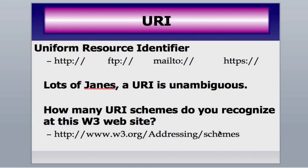Let's go back to the URI — Uniform Resource Identifier. Here are some of them: HTTP, FTP, Mail to, HTTPS — there are several. If you open your web browser and go to w3.org/addressing/schemes, you'll find a really long list of URI schemes. What this allows is different ways to make identifiers so we can identify who Jane is — unambiguously. We don't want any confusion between different Janes: is it Jayne Mansfield, Jane Smith, or Jane down the road who sells books? By having a URI or unique identifier, we'll be able to tell all the different Janes apart.